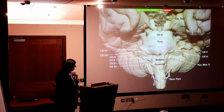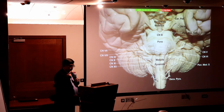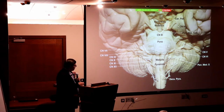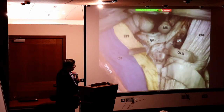Most of the cranial nerves come from the anterior or lateral aspect of the brain stem, except one nerve which comes from the back — the trochlear nerve. Other than that, all 12 cranial nerves come from the front.